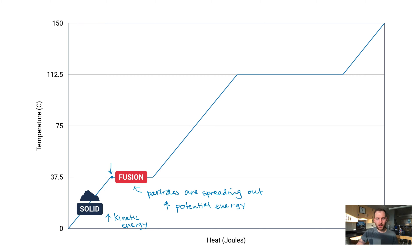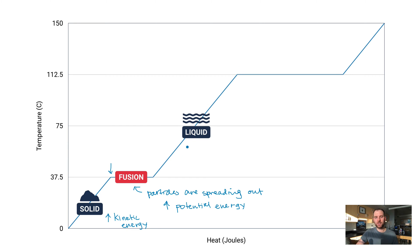From 0 to 37.5 degrees the substance was a solid. At 37.5 it spends some time doing the work of changing phase — particles are going from a more ordered solid into a more flowing liquid. In this entire middle slant the substance is completely in the liquid phase, and now potential energy stays the same while kinetic energy is increasing again.